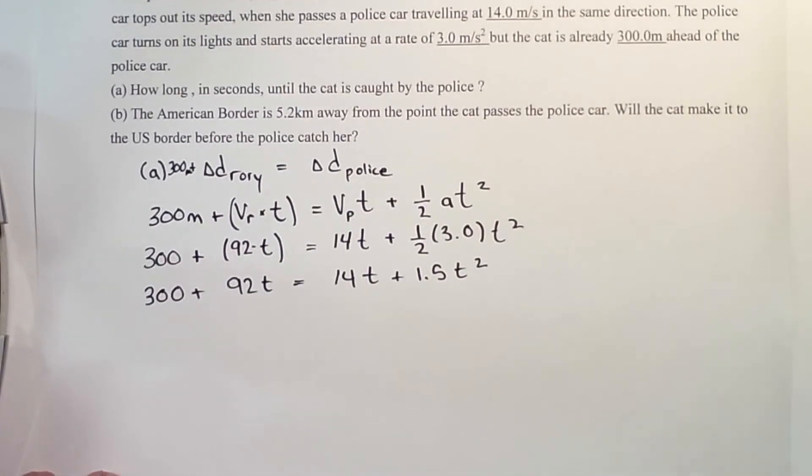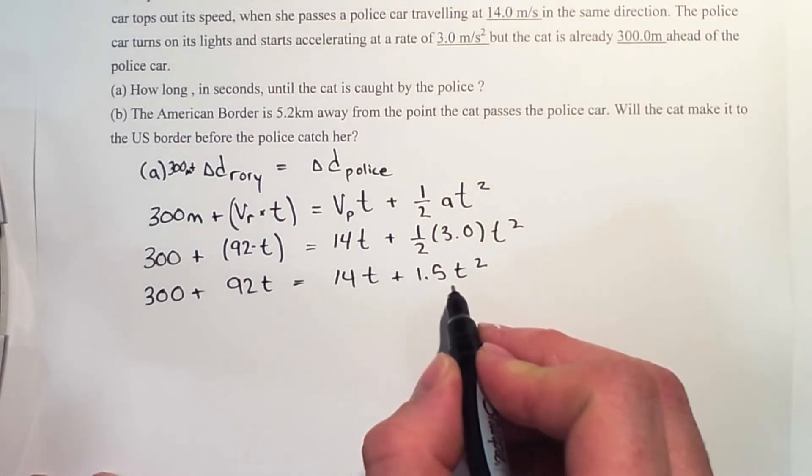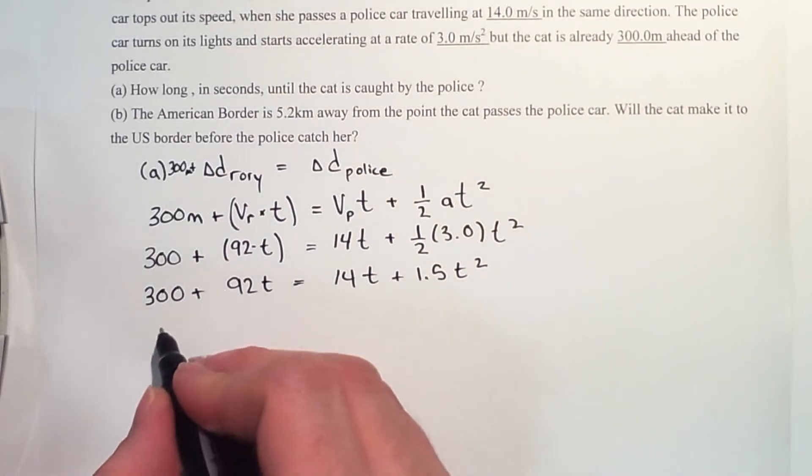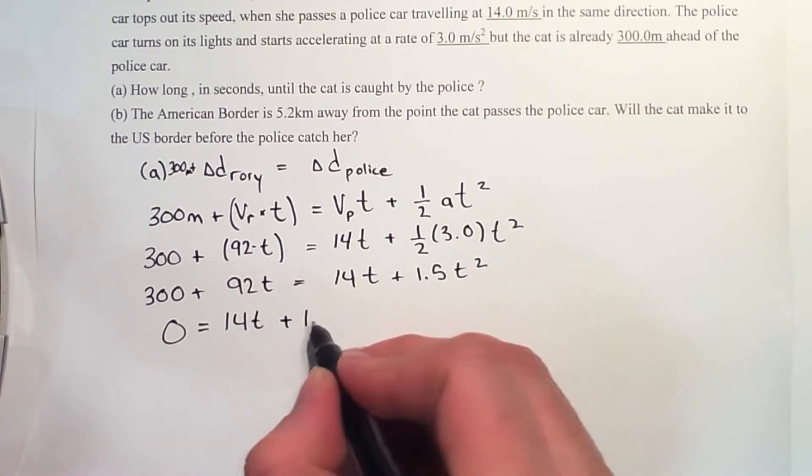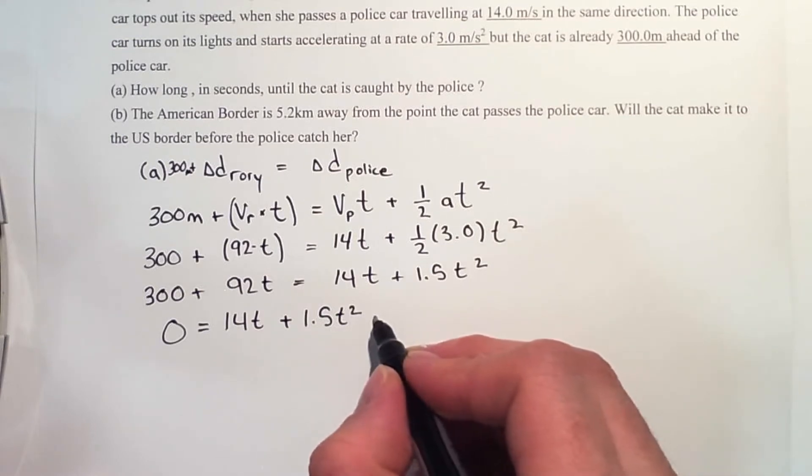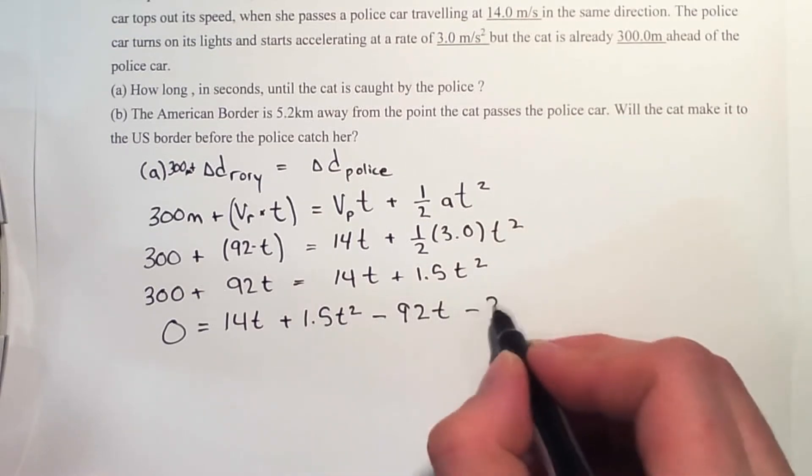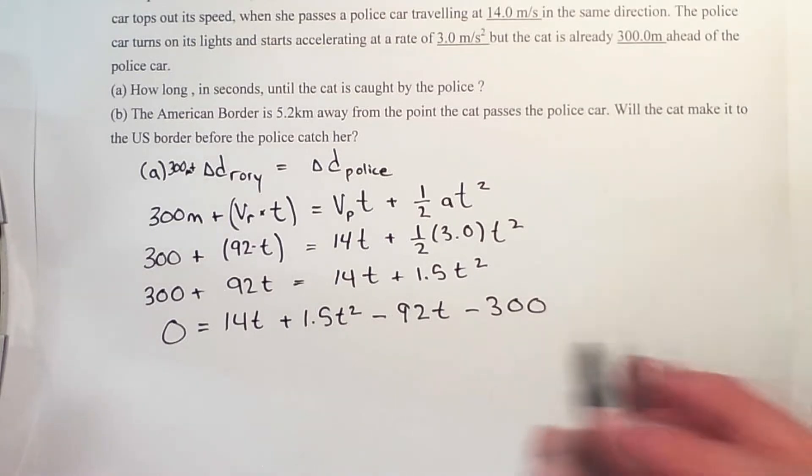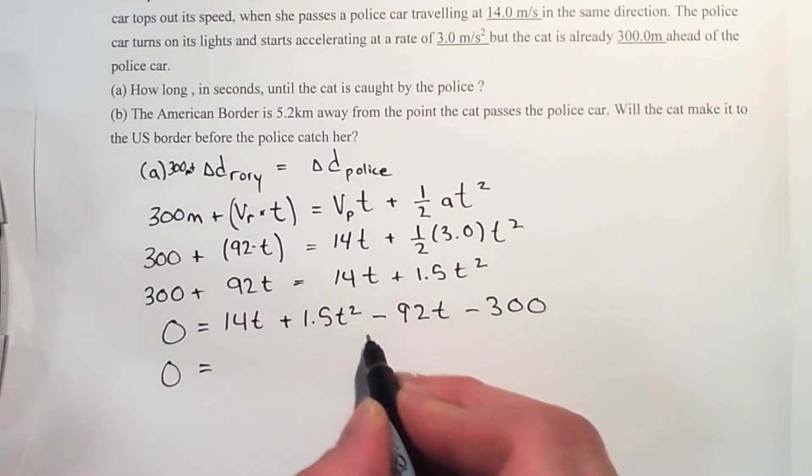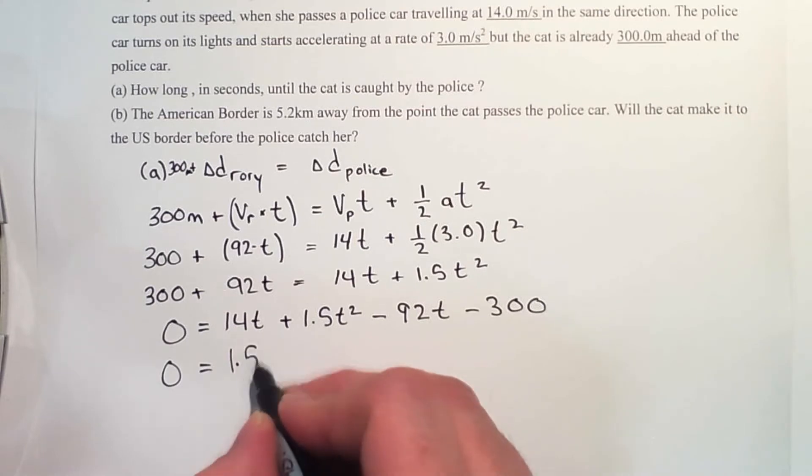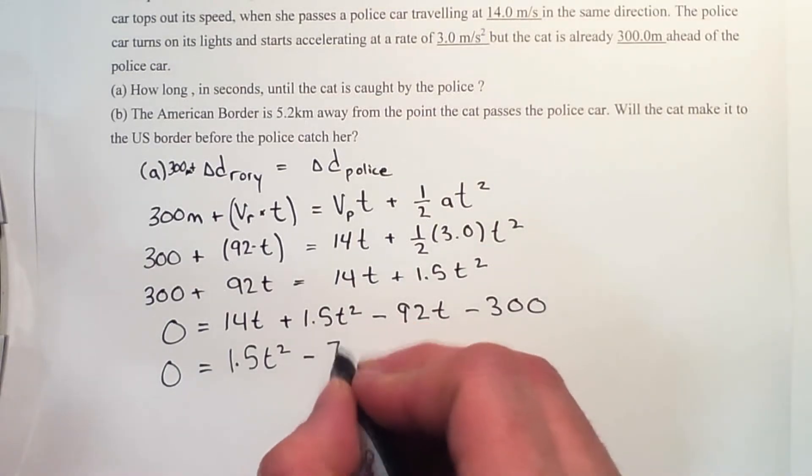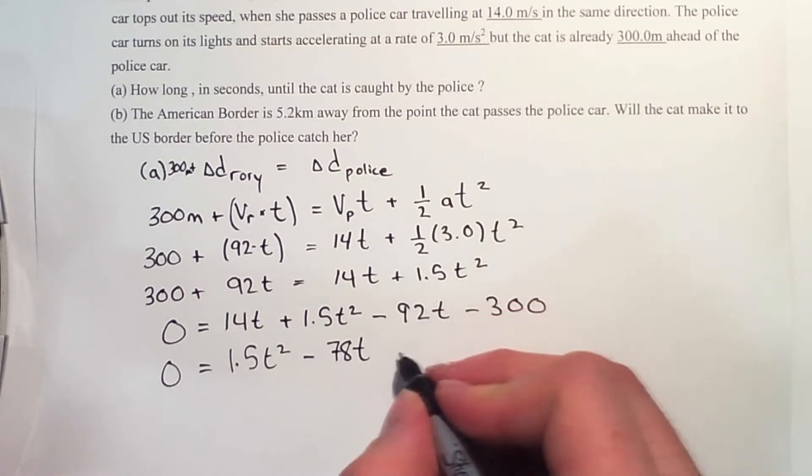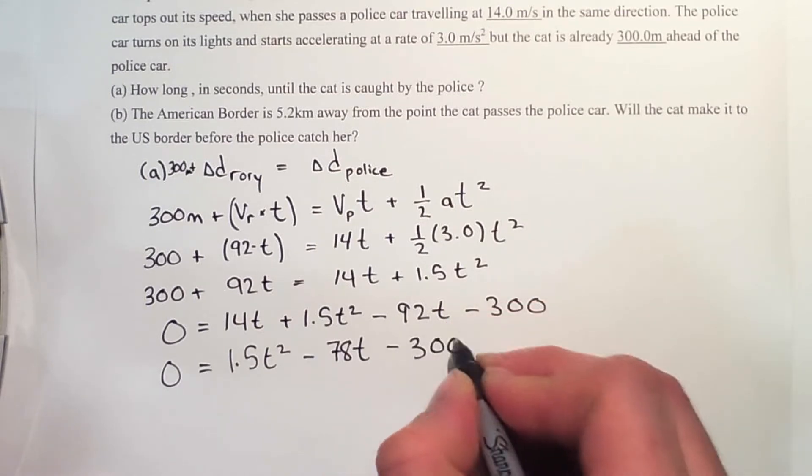So the goal here is to get this into quadratic form. So I have t squared on the other side. So zero equals 14t plus 1.5t squared. Take away 92t, take away 300. Collect terms, we'll have to put them in order of power. So 1.5t squared, 14 take away 92 is minus 78t. Minus 300.